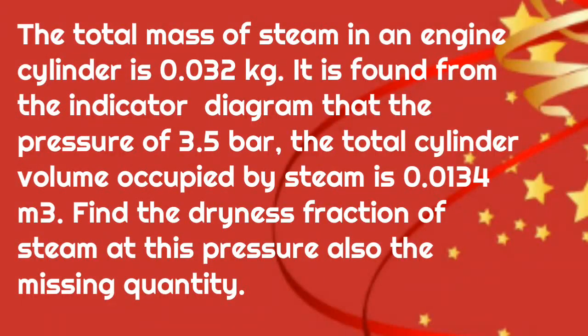We will solve one problem. The total mass of steam in an engine cylinder is 0.032 kg. From the indicator diagram, at a pressure of 3.5 bar the total cylinder volume occupied by steam is 0.0134 m³. Find the dryness fraction of steam at this pressure and also the missing quantity.